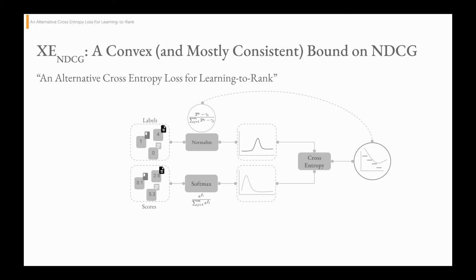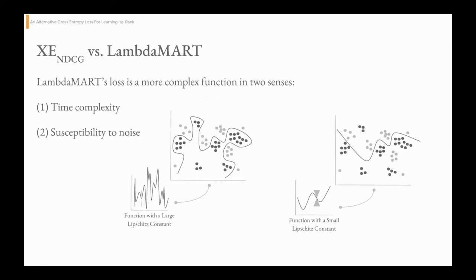For a full proof and analysis, you can refer to the paper. By comparing this modified cross-entropy loss with LambdaMART, we can show that the cross-entropy loss is cheaper to compute, and further, that it's a simpler function implying it is not as susceptible as LambdaMART to noise in the input. We're going to study this in our experiments.